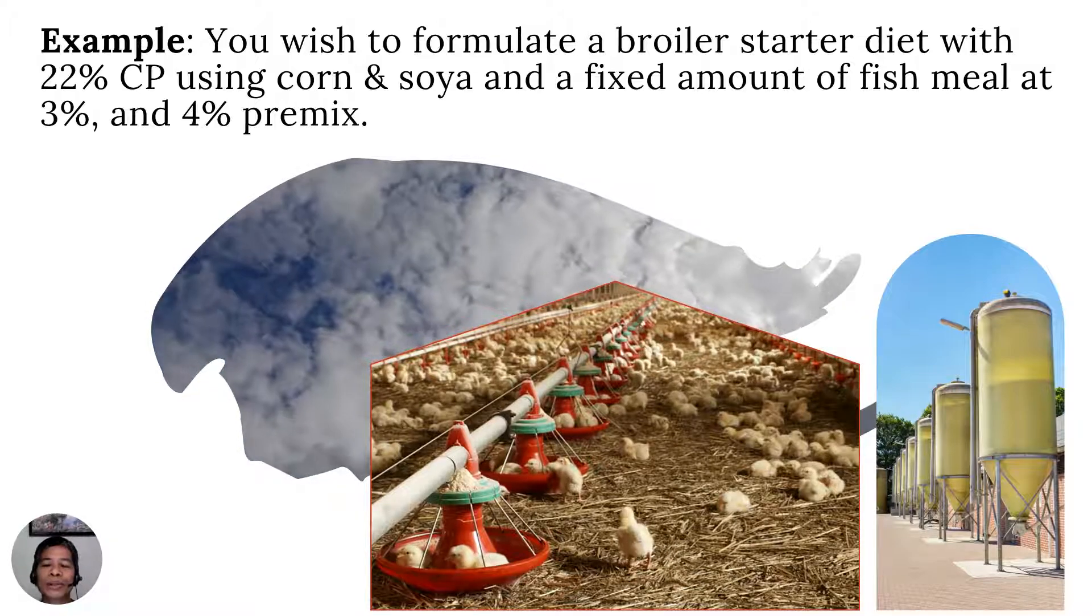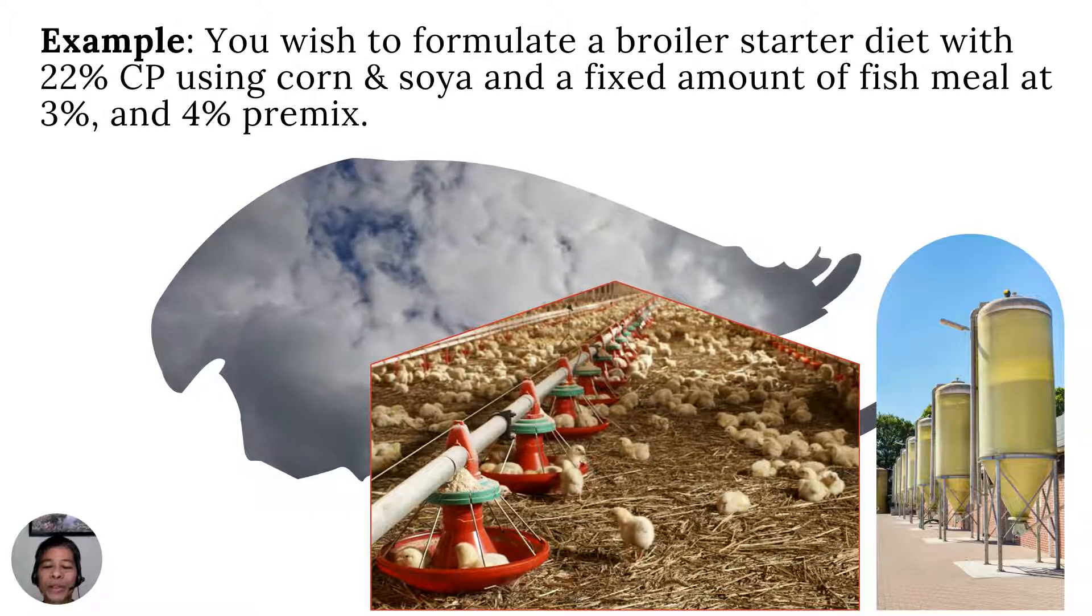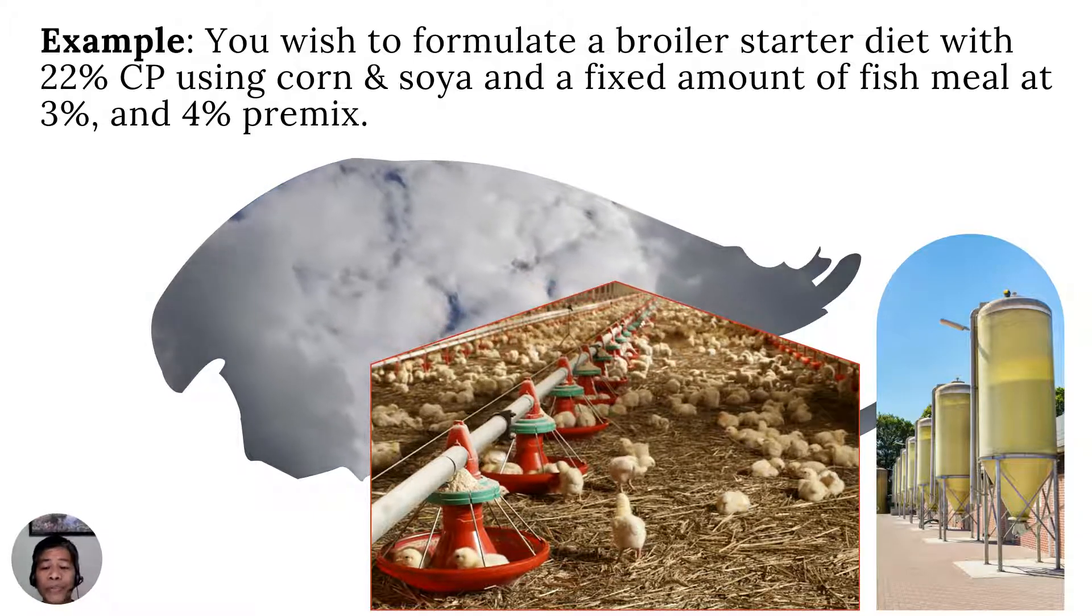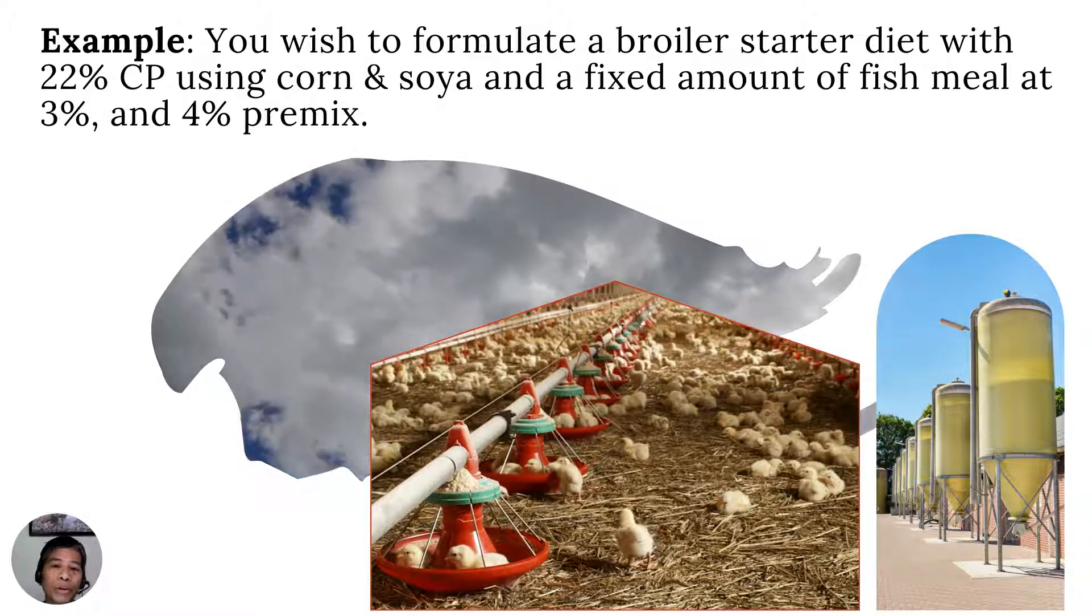For example, you need to formulate a broiler starter diet with 22% CP using corn and soybean meal and a fixed amount of fish meal at 3% and 4% premix.